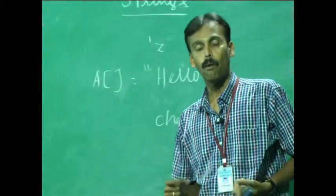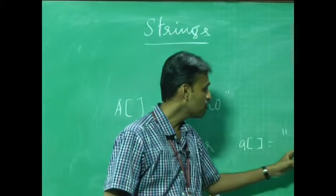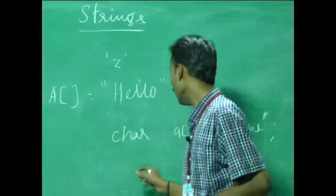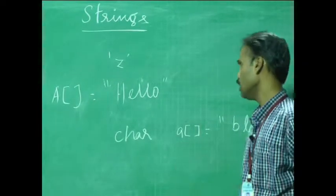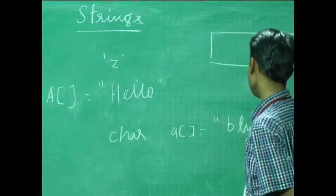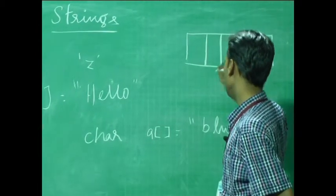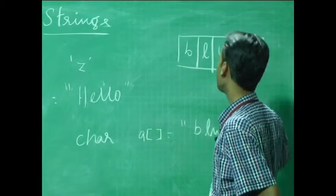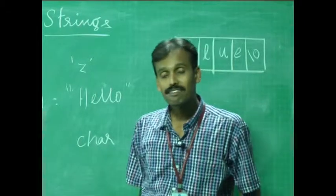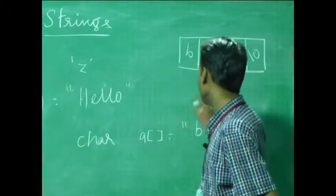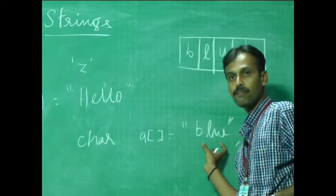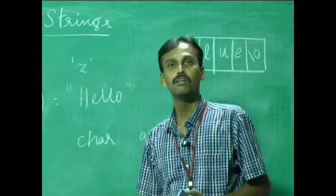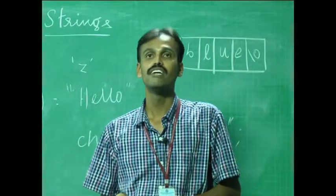I can also have pointers initialized into this string, meaning the pointer is initialized to the starting address of this character. An important point: when a string is assigned to a pointer, the memory locations hold characters one by one — it would hold B, L, U, and E as individual characters, eventually terminated by a null character. Strings are represented as a character array that ends with a null character. So when I say a string 'blue', it has five elements rather than four, where the fifth element is the null character.